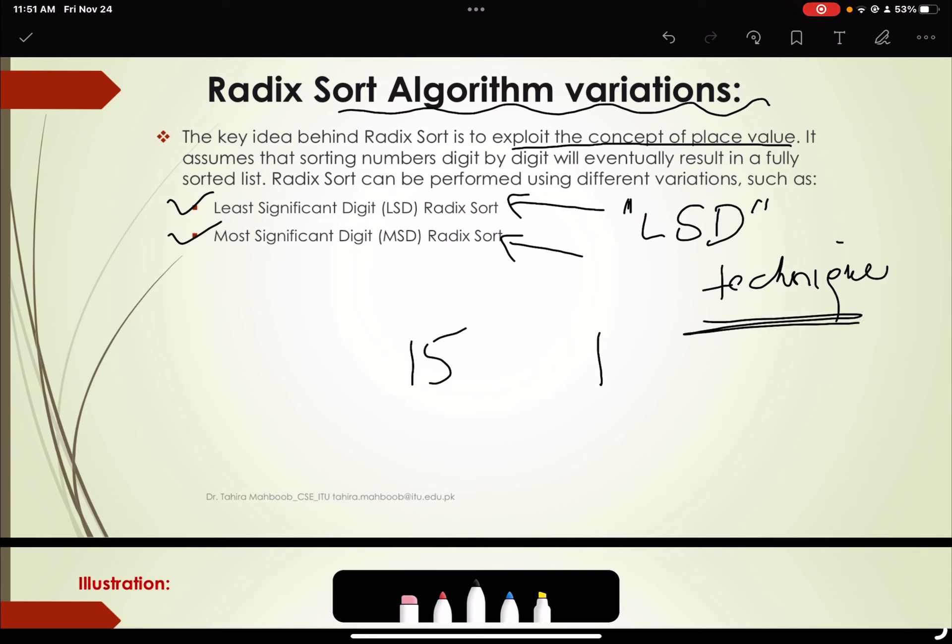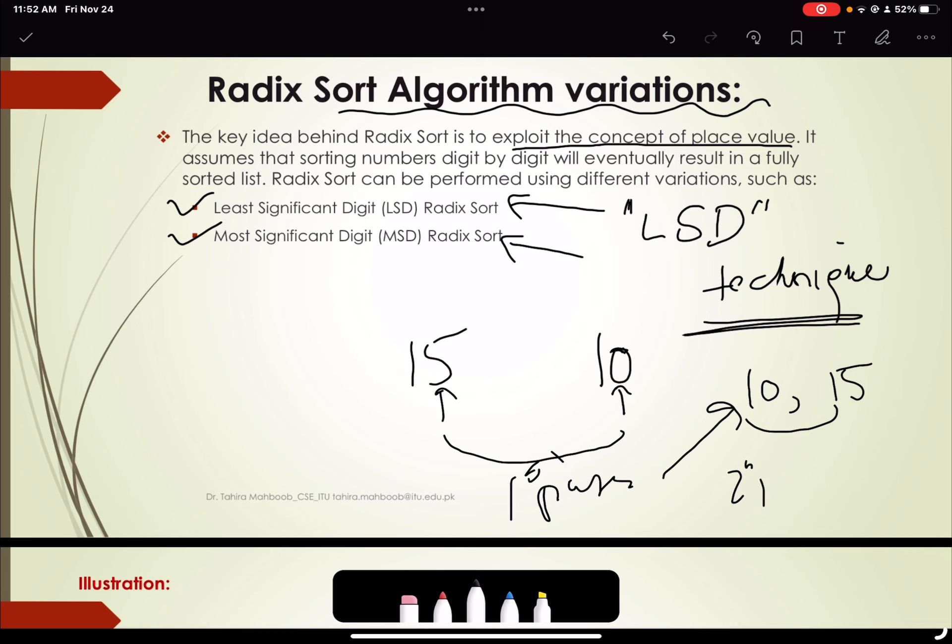So if we are to compare 15 and 10, we will first compare the least significant digit with each other and we will place 10 because 10 is smaller and then 15 comes afterward in the first pass. And in the second pass we will compare one and one. So for the first part, we will have this result and in the second pass these will remain as such. So 10 and 15 are then sorted.